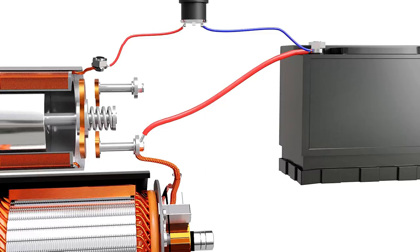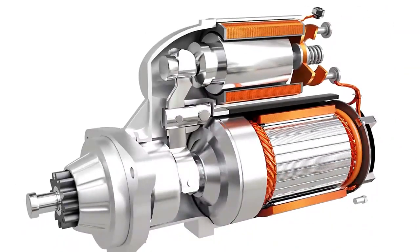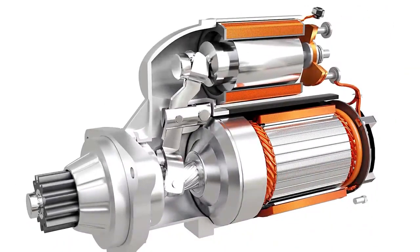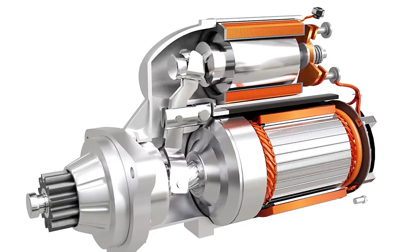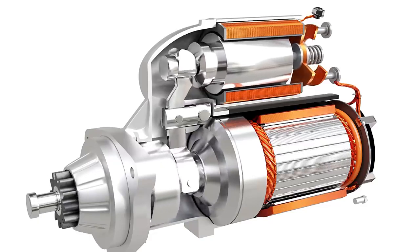This is why a solenoid is used, which demands lower current for being energized. The solenoid has another crucial function: it helps to slide the pinion and engage it with the flywheel before the motor starts to spin. As the pinion slides towards the flywheel, it slightly rotates on its axis as shown here.